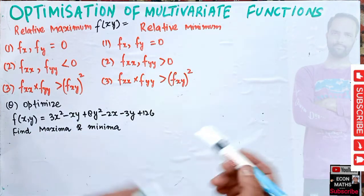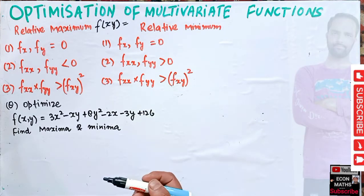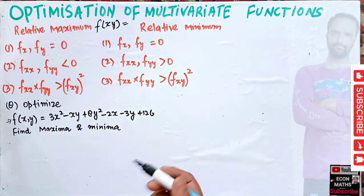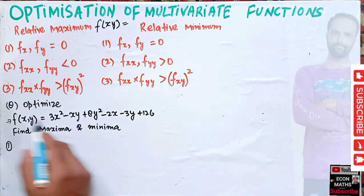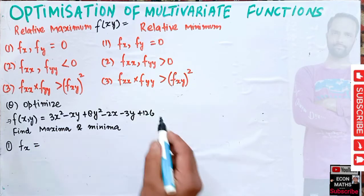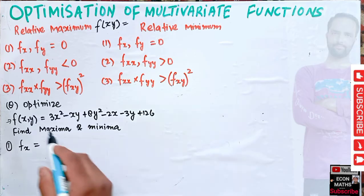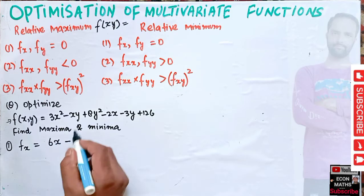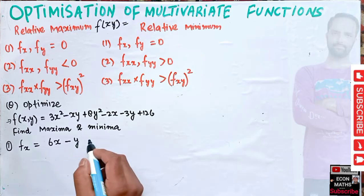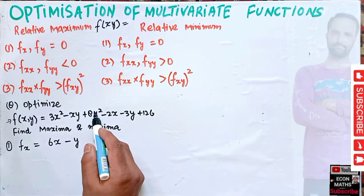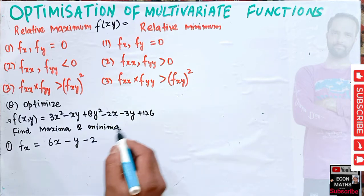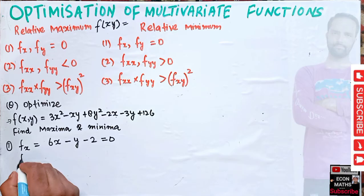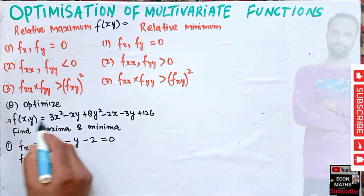The first step is to find fx and fy. We partially differentiate the multivariate function with respect to x and set it equal to zero. The derivative of x² is 2x, so 3 times 2x gives 6x. The derivative of xy with respect to x is y, so we get minus y. The derivative of x is 1, giving minus 2. All other terms vanish. So fx = 6x - y - 2 = 0.